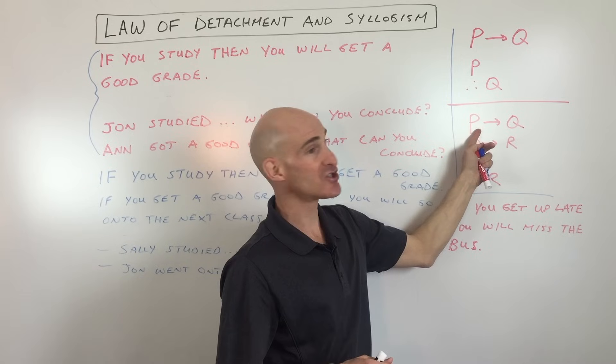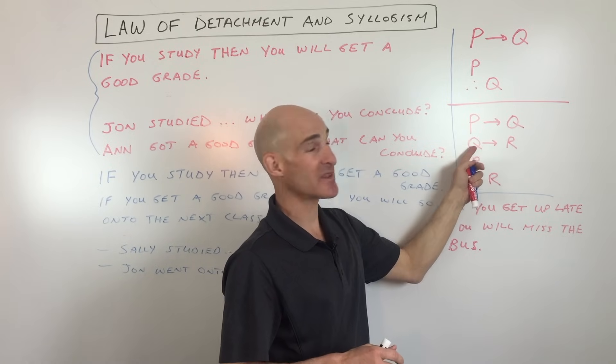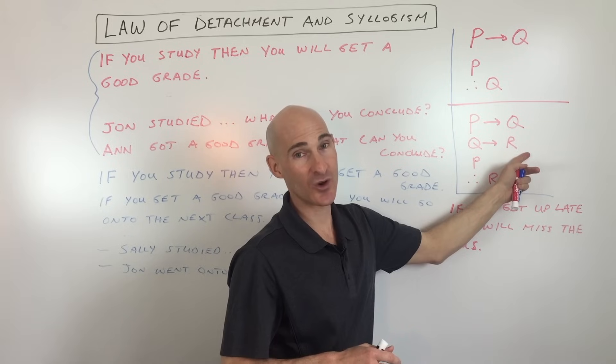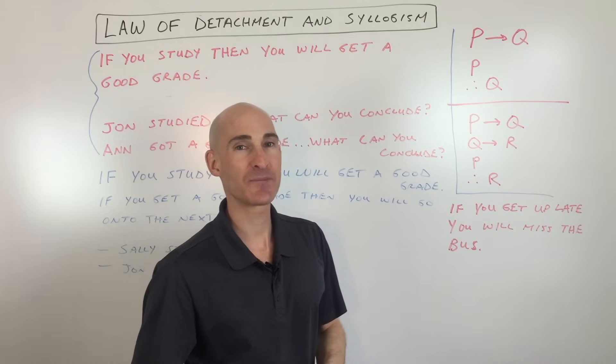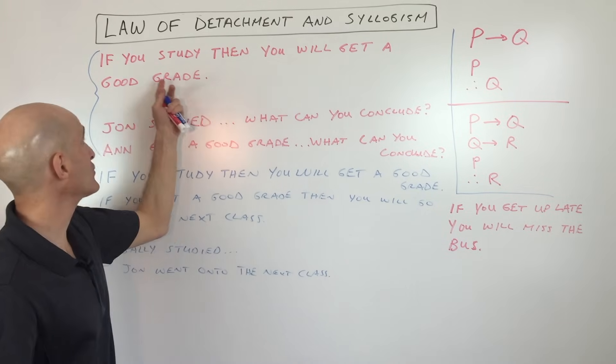But here what happens with the law of syllogism is that the conclusion ends up becoming the hypothesis in the next statement, which leads to another conclusion, and so you have that chain of events. So let me see if I can show you what I mean in some of these examples here.